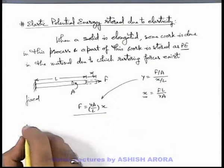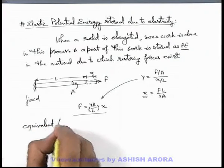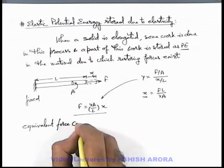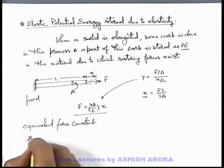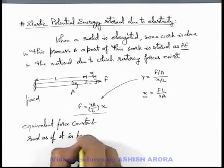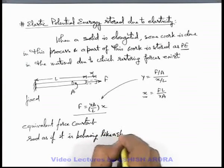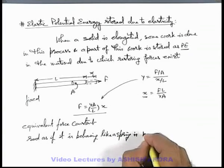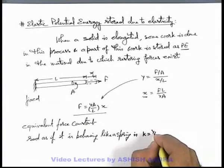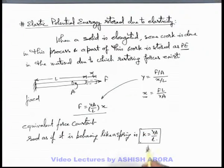So in this situation for the rod, we can say the equivalent force constant of the rod, as if it is behaving like a spring, is YA/L. This equivalent force constant can be written as YA by L. This is an important concept — remember it for future use. A rod can be treated like a spring with equivalent force constant YA/L.